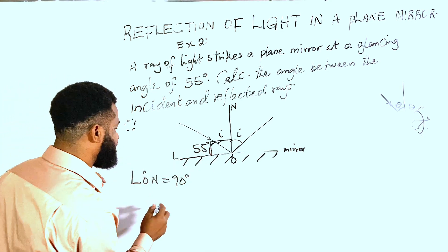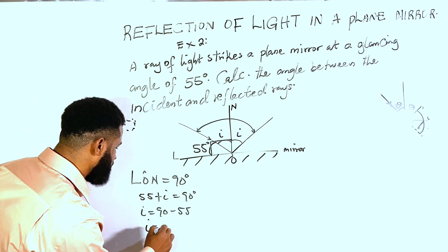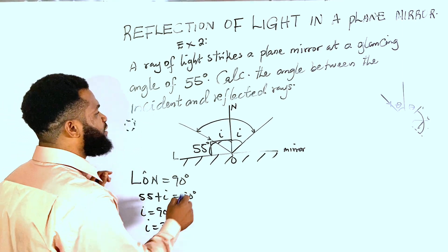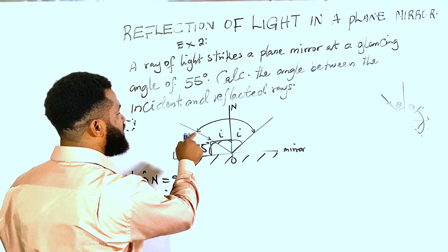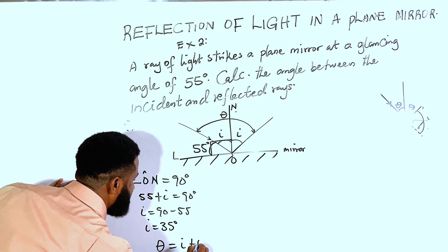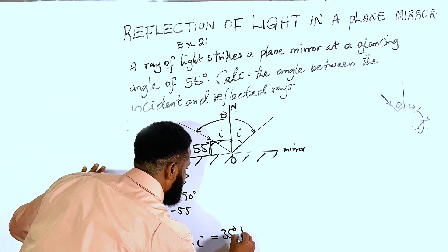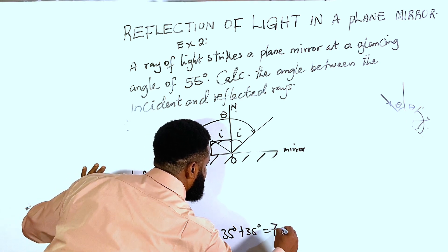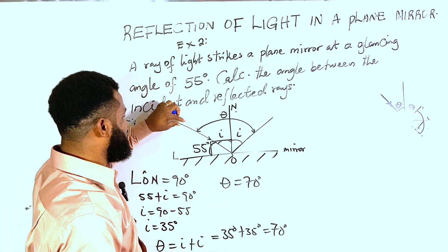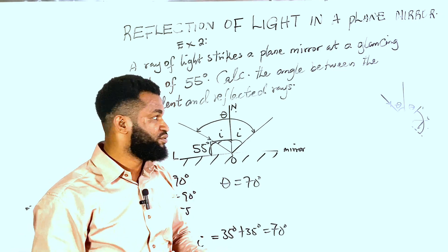So LON equals 90 degrees. Therefore 55 plus I equals 90, giving I equals 90 minus 55, which is 35 degrees. The angle theta between the incident and reflected ray equals I plus I, which is 35 plus 35, giving 70 degrees. Therefore theta is 70 degrees — that is the angle between the incident ray and the reflected ray.